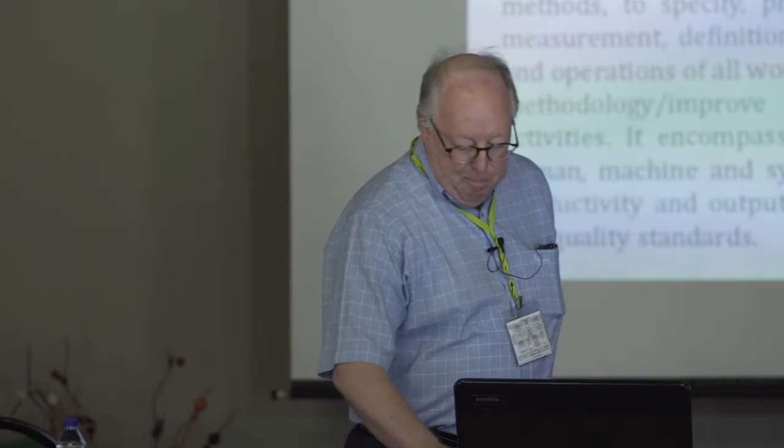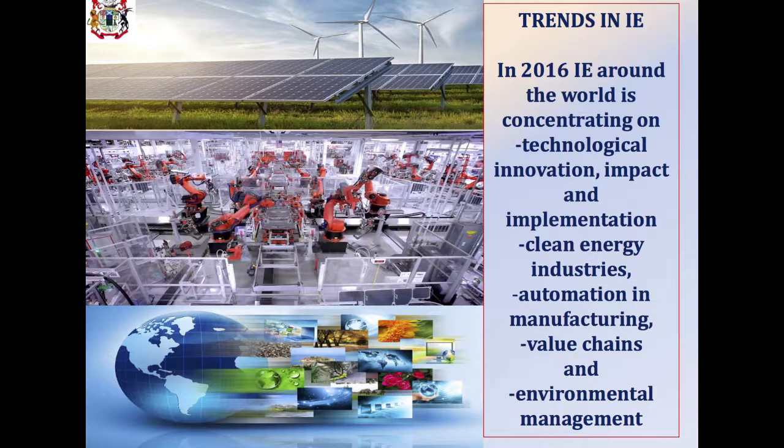And more importantly, provide solutions for improved processes, actions, activities, and in particular system dynamics in order to affect greater efficiency, productivity, and output at lower cost to specific quality standards. Have I got it right? That's important, because otherwise I'm on the wrong track, as I'm not an industrial engineer. Having said that, I have studied and noticed that trends in industrial engineering around the world are growing, particularly concentrating on technological innovation and its impact. Implementation is a very important part of that, and also the clean energy industries, automation, manufacturing, value chains, and environmental management. Most of these objectives relate to cost, efficiency, and other issues.